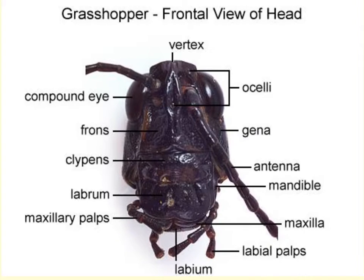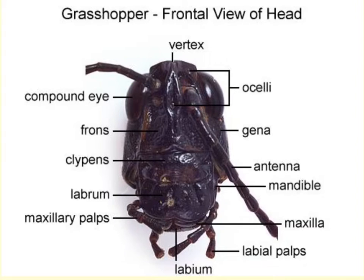On the head, we'll see these movable antennae and the compound eyes. There are also three simple eyes called the ocellae, located in distinct positions on the head. The ocellae function to detect motion above the grasshopper.